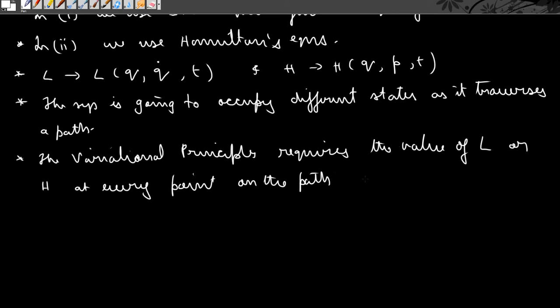What I mean is that if we use Hamilton's principle, our action is defined as the integral of L dt. Along a particular path we need to know the value of L at every point on the path, as we integrate along the path to get the value of the action. The correct path is the one for which the action is stationary.